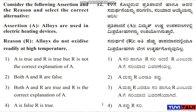Consider the following assertion and reason and select the correct alternative. Assertion A: Alloys are used in electric heating devices. Reason R: Alloys do not oxidize readily at high temperature. Option 1: A is true and R is true but R is not the correct explanation of A. Option 2: Both A and R are false. Option 3: Both A and R are true and R is the correct explanation of A. Option 4: A is false, R is true.